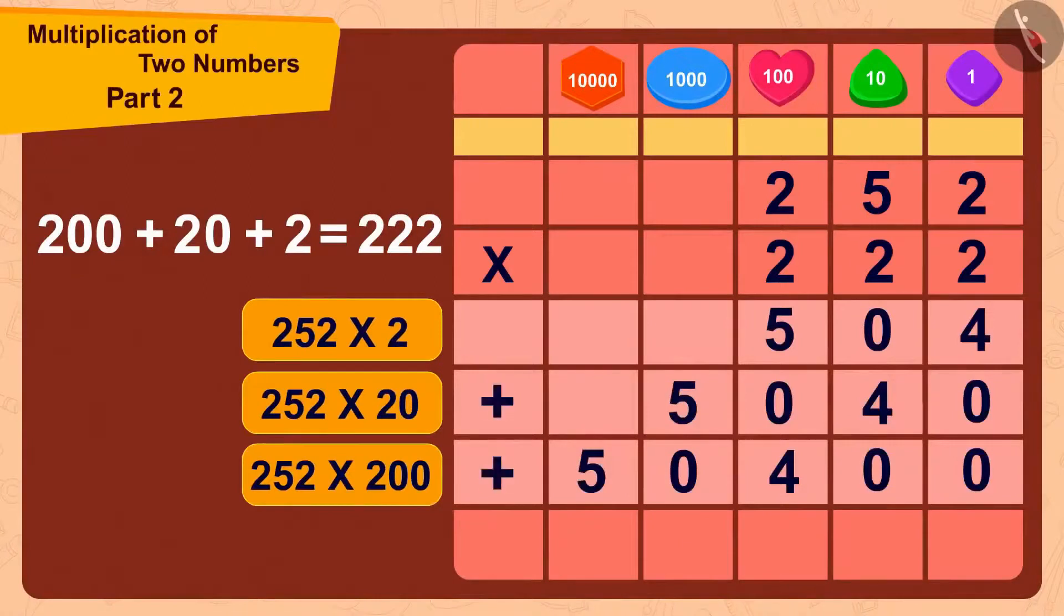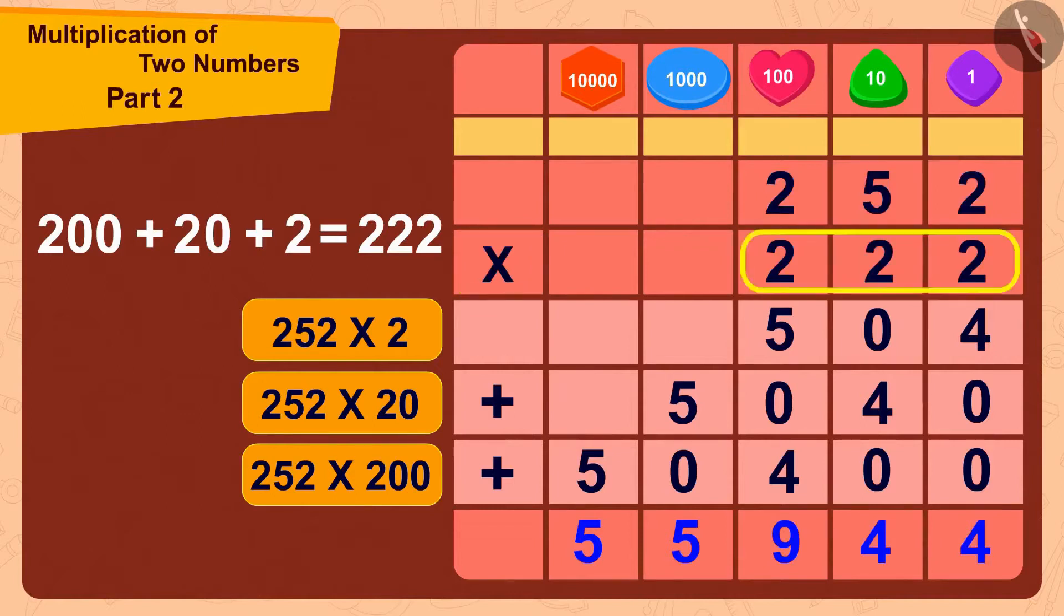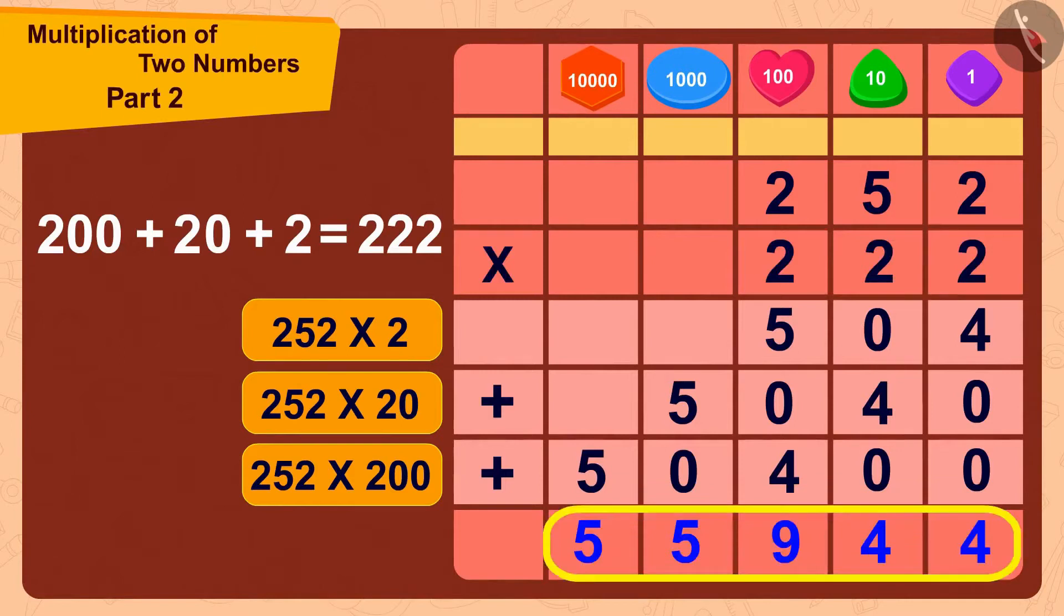Well done, children! Your answer is absolutely correct! Bhola now has 252 times 222 or 55,944 toffees!